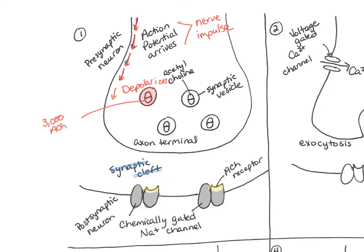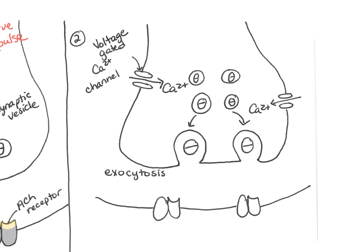Now let's look at step two. The action potential depolarizing the synaptic terminal causes voltage-gated calcium channels to open. As the synaptic terminal is depolarized, the voltage change causes these calcium channels to open. Calcium is higher in the extracellular fluid, so calcium moves into the synaptic terminal. The entry of extracellular calcium ions into the synaptic terminal triggers the exocytosis of acetylcholine from the vesicles into the synaptic cleft.